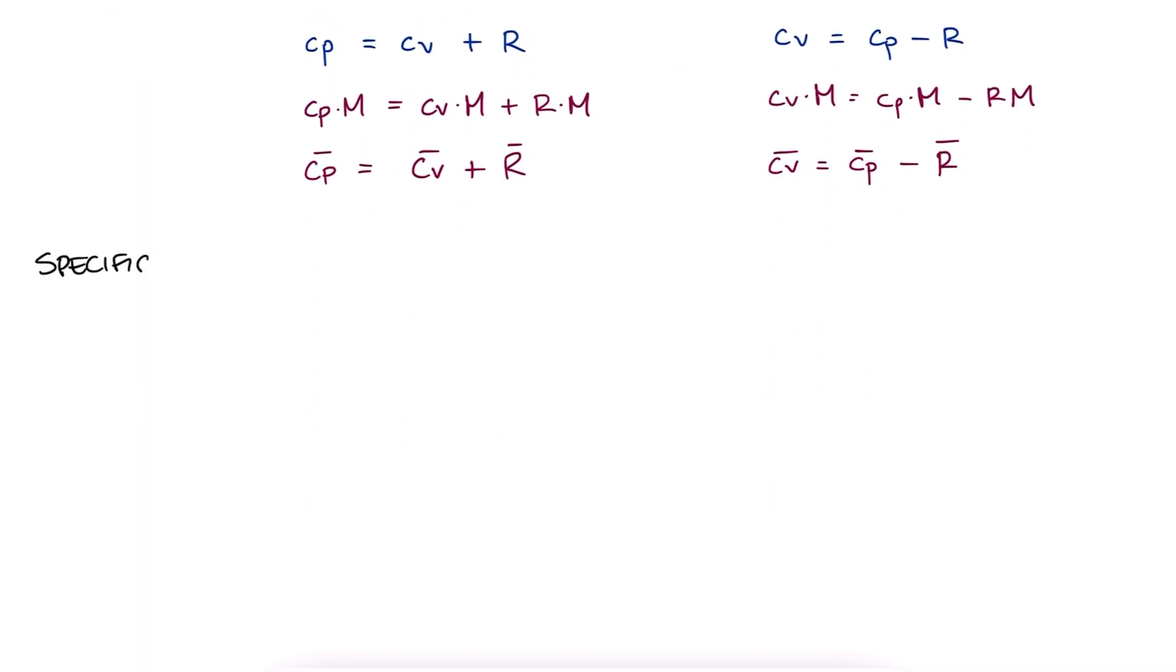One last definition here is the specific heat ratio. This ratio is defined as k equal to cp over cv. This shouldn't be confused with the coefficient of thermal conductivity when you get to courses like heat transfer. Just a heads up.